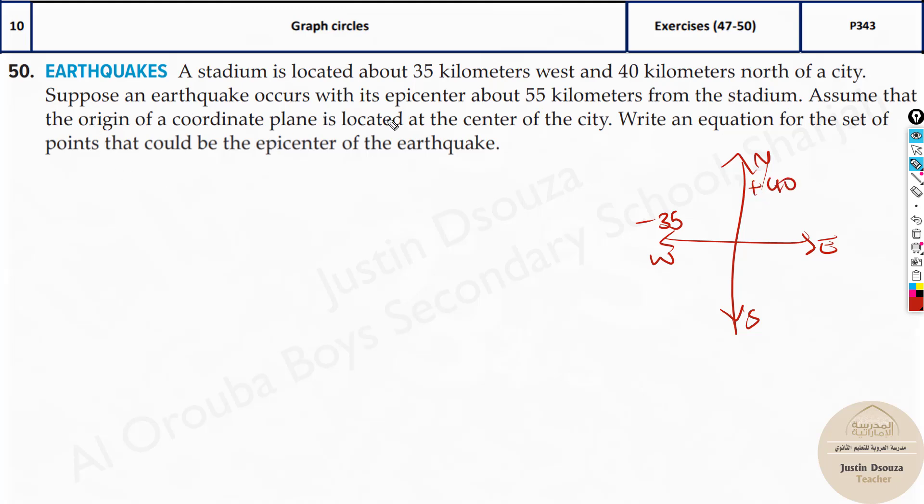Suppose an earthquake occurs with its epicenter about 55 kilometers from the stadium. Assume that the origin of the coordinate plane is located at the center of the city. Write an equation for the set of points that could be the epicenter of the earthquake. Basically over here, what they mean is that's the radius. Because over here they have given us the details of that particular stadium and it's 55 kilometers away, right? So that'll be the radius.